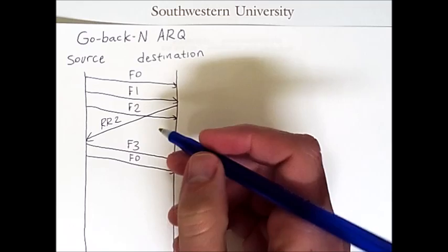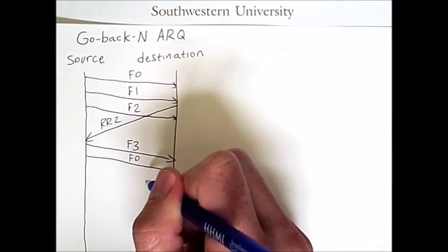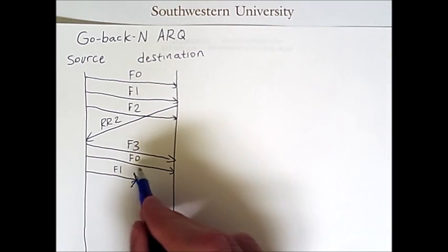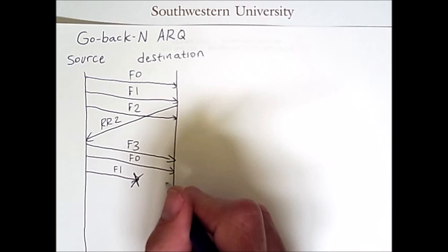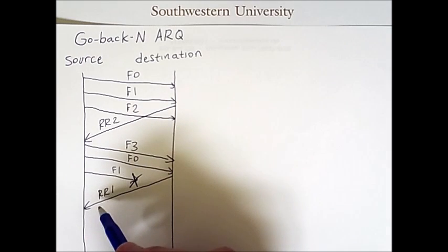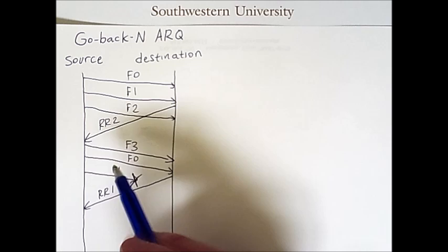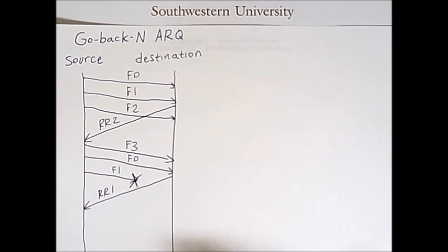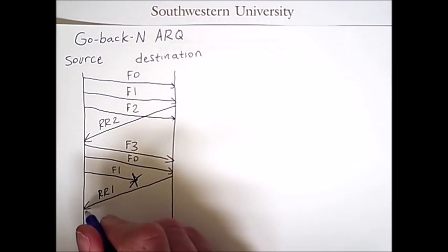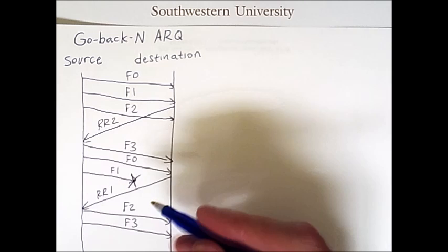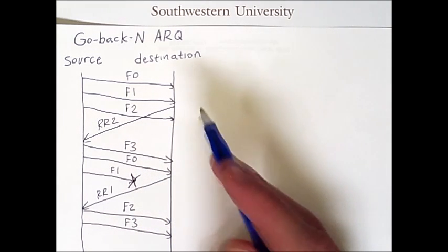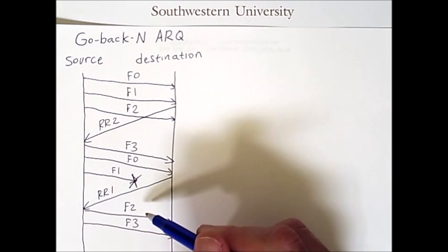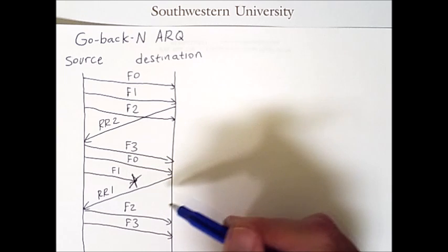So let's say that frame 1 is lost in transmission. Let's also say that after receiving frame 0, the destination sent a ready-to-receive. Once this ready-to-receive arrives, the source has the all-clear to send a few more frames. So it will continue and send frames 2 and 3. But the moment that frame 2 arrives at the destination, it will complain. It was expecting frame 1. But now frame 2 has shown up. This is out of order.